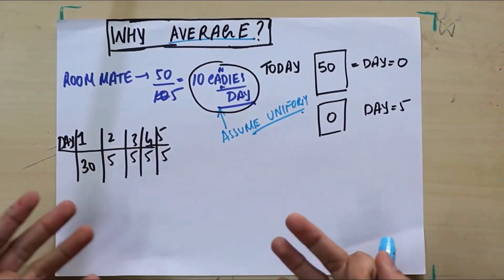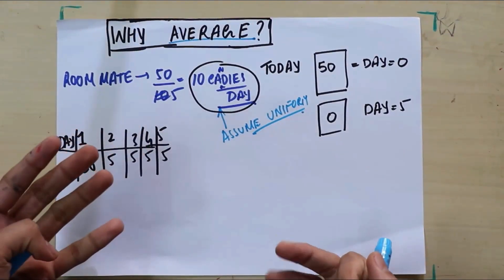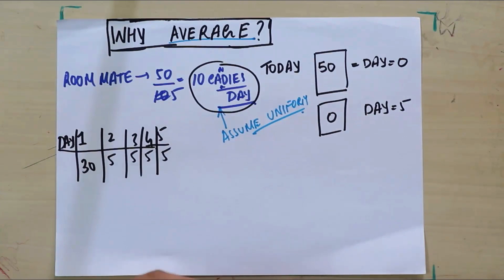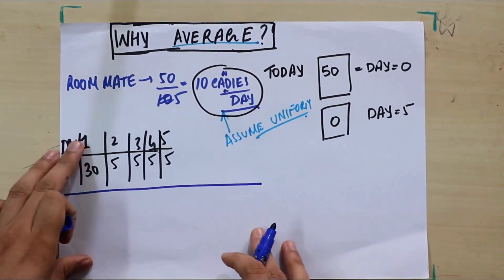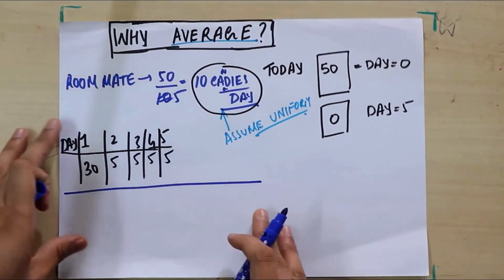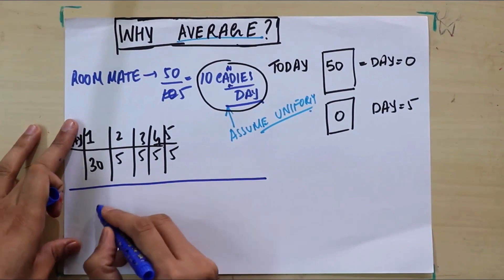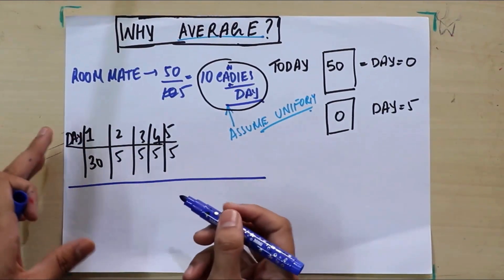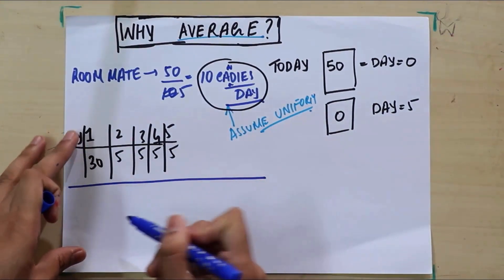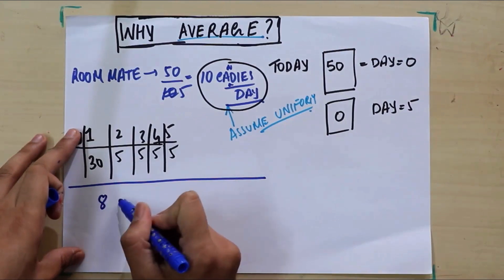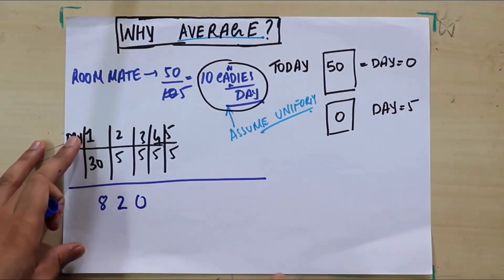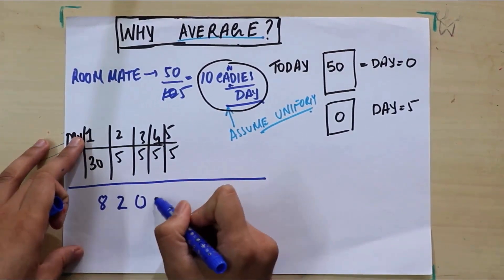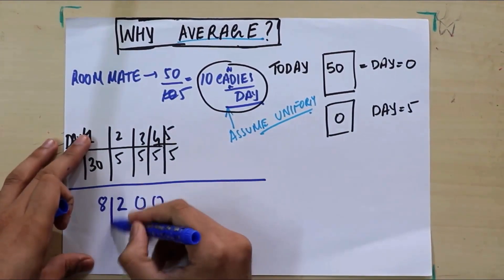Let me give you another example which you may be familiar with. Let's take a class average. Suppose there are four people in a class, very short class, disappointing class maybe. Anyways, there are four people and they take a test out of 10. One person gets eight, one person gets a miserable score of two, another guy gets zero, and one more fellow, even he gets a zero. So this is what we get.